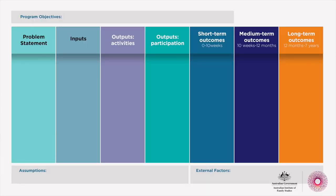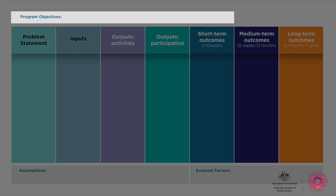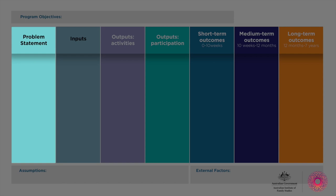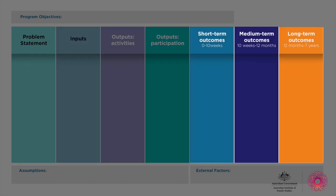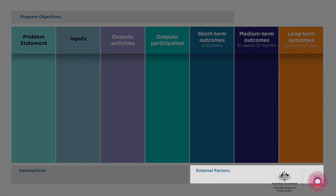In our template you'll see there are 10 elements: a program objective, a problem statement, inputs, outputs, short, medium and long-term outcomes, assumptions and external factors. Some templates will have more fields and some will have less. The good news is that even if you're using a different template, the program elements are often similar. We're going to work through each of these fields and explain what they mean — feel free to pause the video at the end of each chapter so you can complete the logic model as you go along.